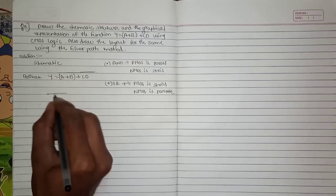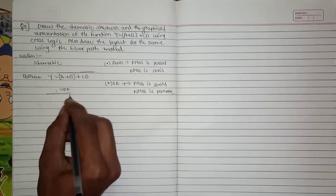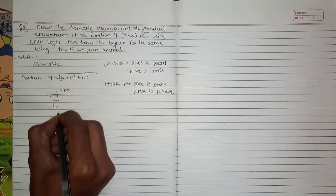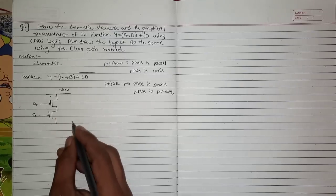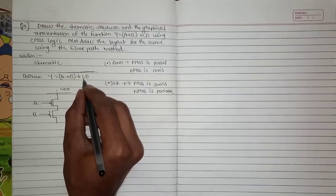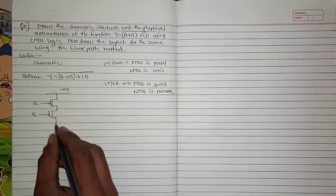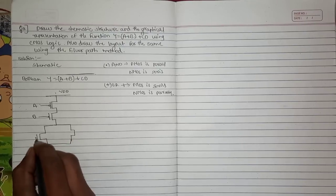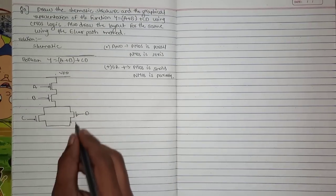Starting with VDD, in the pull-up network consisting of PMOS transistors, first we draw for the A+B portion — this is A and this is B. Next, since there is a plus between A+B and C·D, for the AND operation between C and D, these PMOS transistors are connected in parallel. This is C and this is D. This completes the pull-up network.